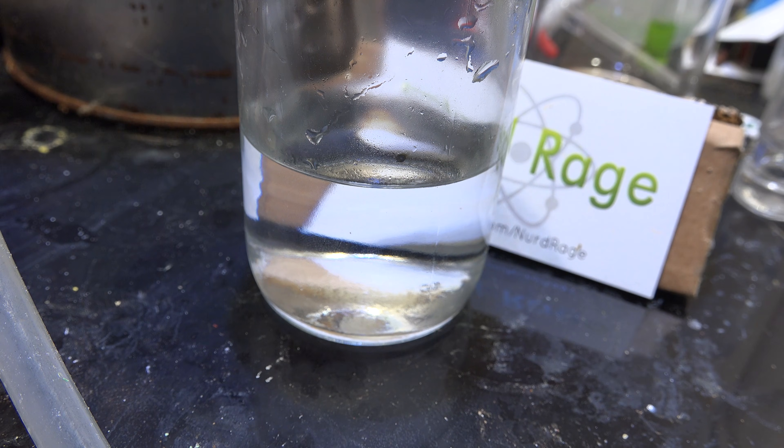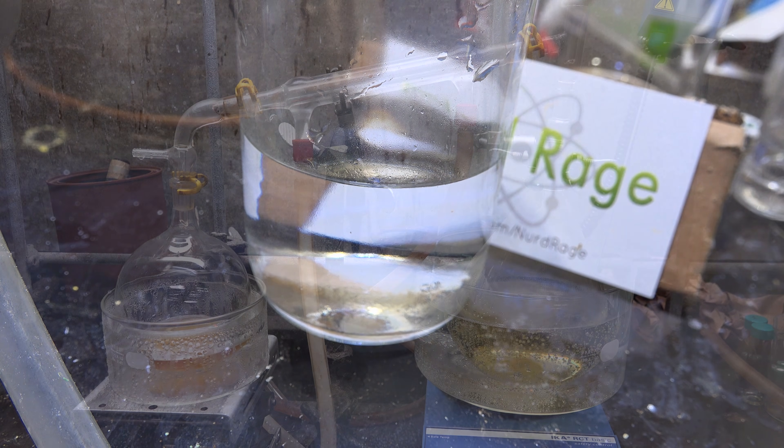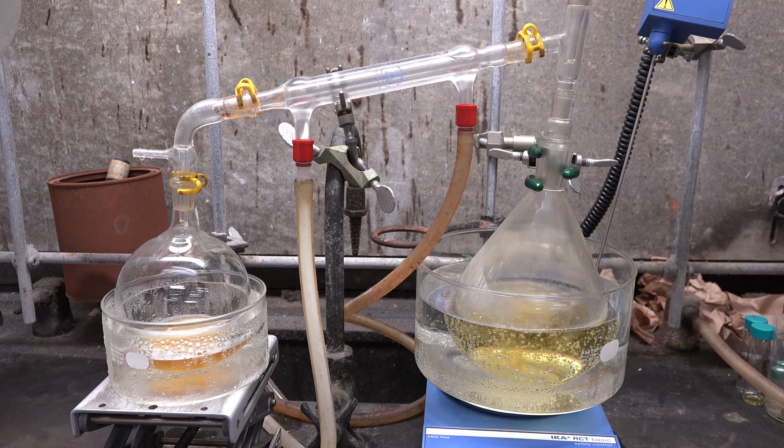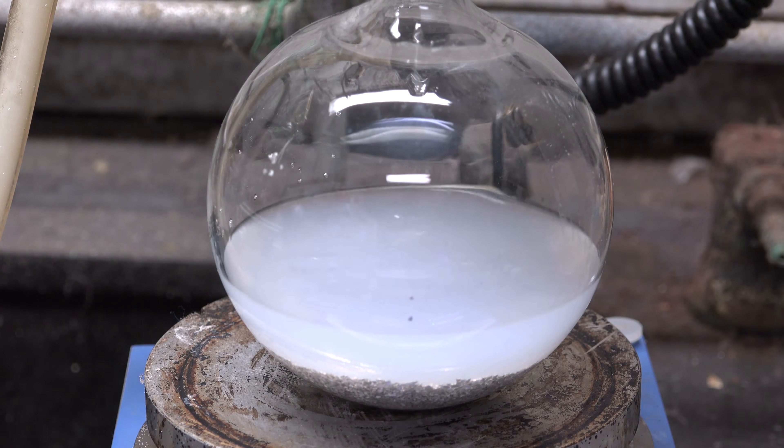And there it is, pure bromohexane. Our yield was 155 grams or about 93%. And that's how we make bromoethane and bromohexane from their corresponding alcohols. I'll be using these in upcoming videos to make Grignard reagents. Thanks for watching.